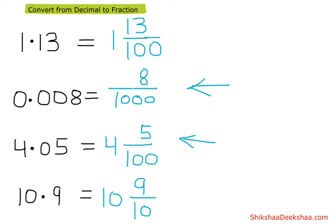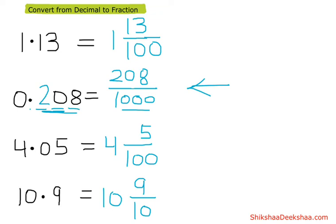But suppose we have a number like point two zero eight — now we can't ignore this zero. We have to write the whole two zero eight at the top, and the fraction is two zero eight by thousand. It is thousand because after the point we have just three digits, meaning we have three zeros at the bottom. So the answer is two zero eight by thousand.